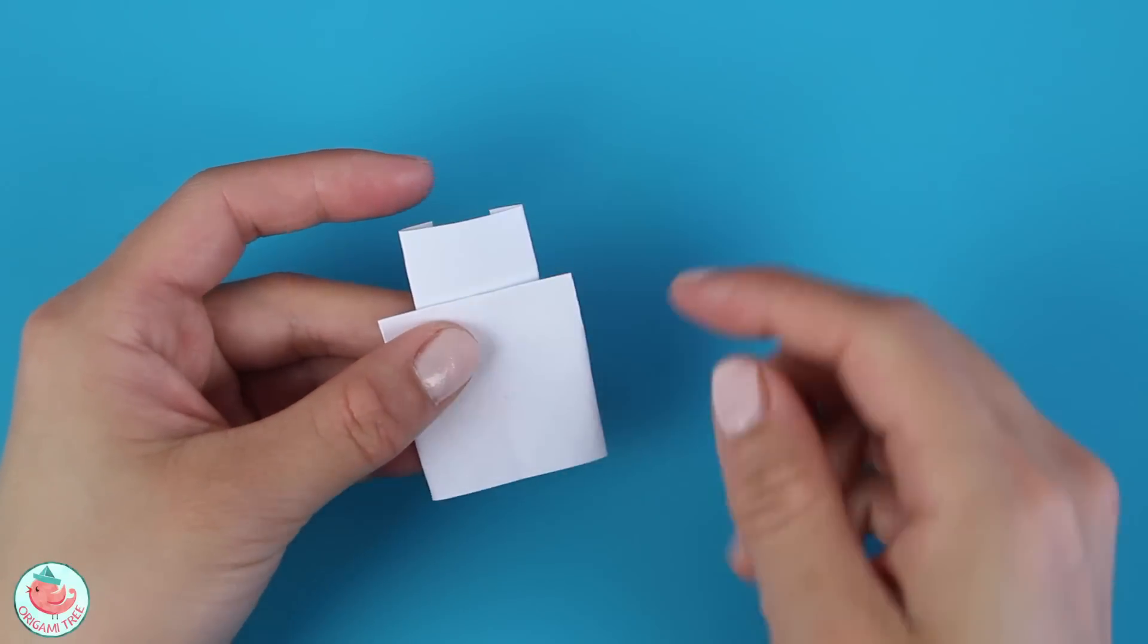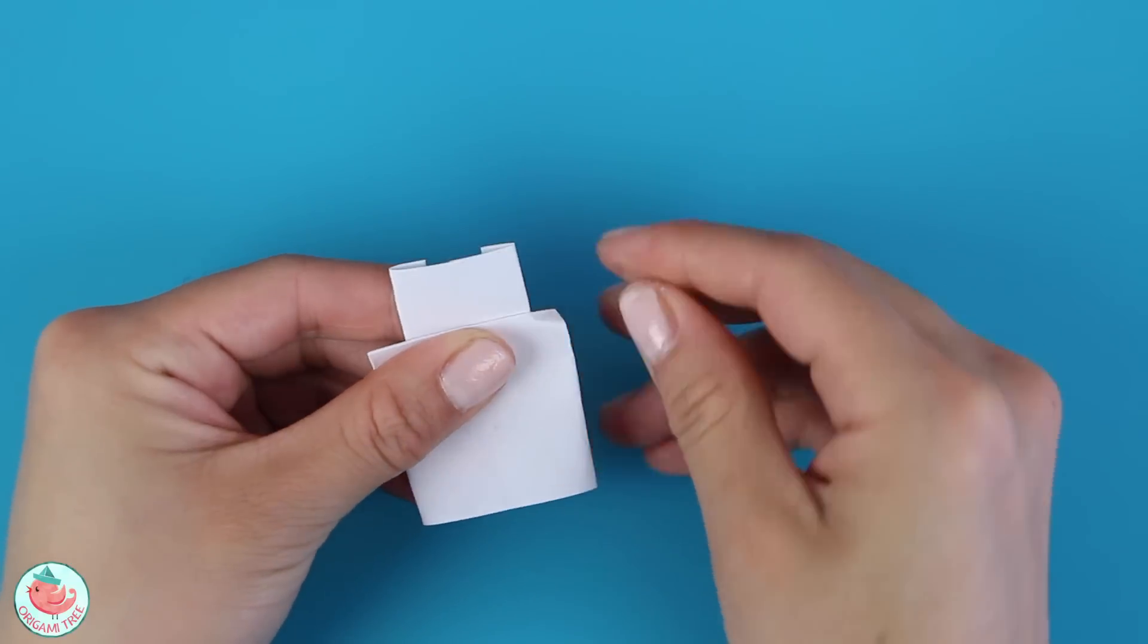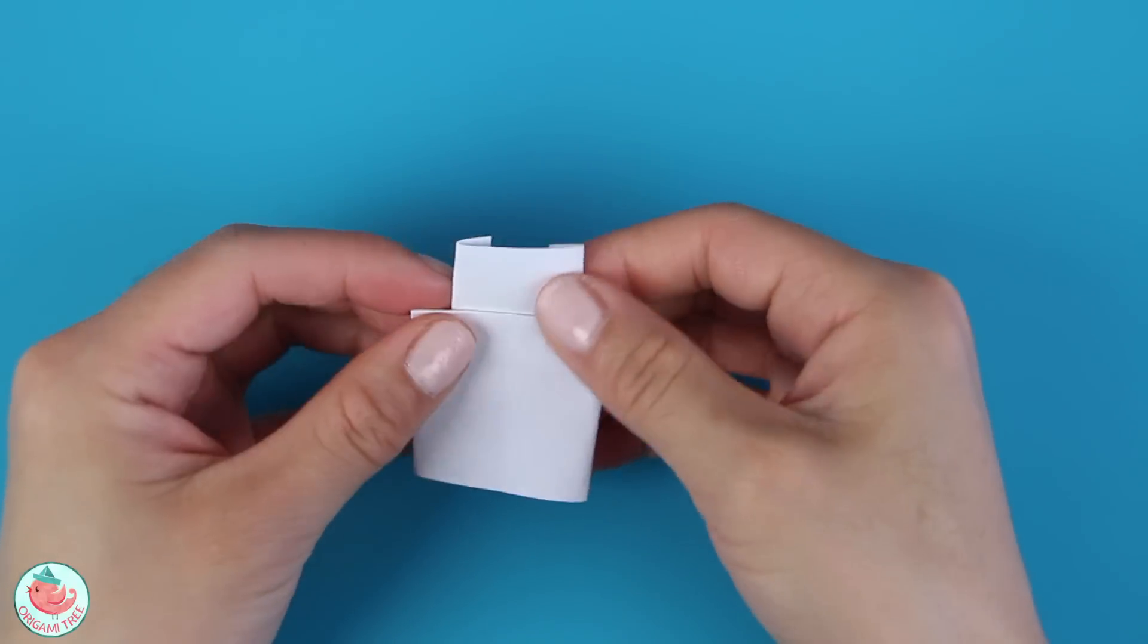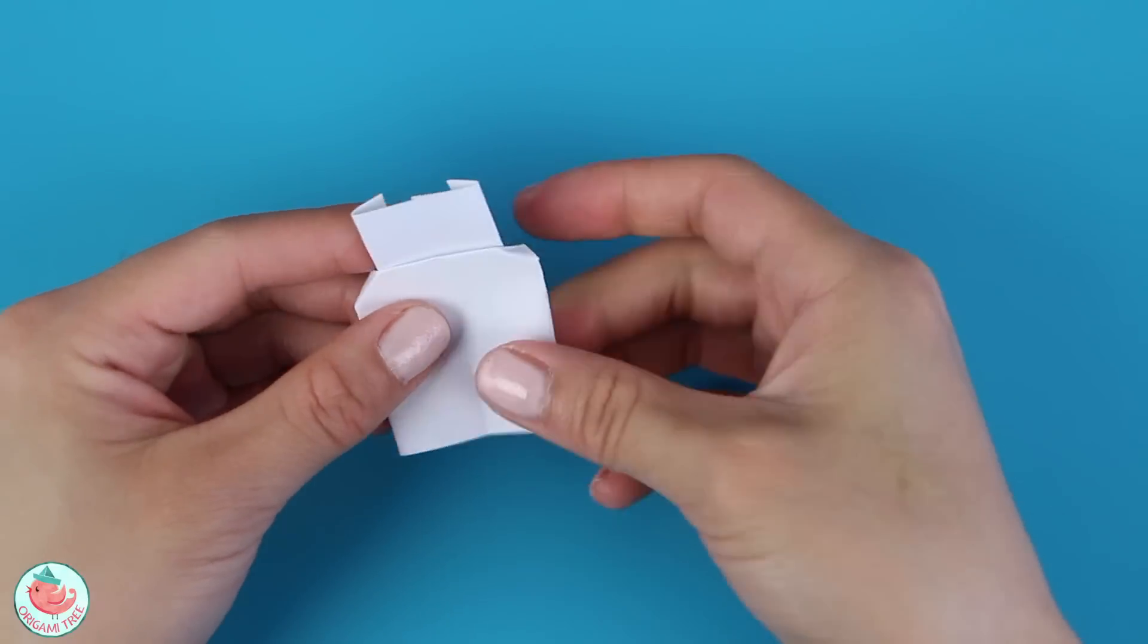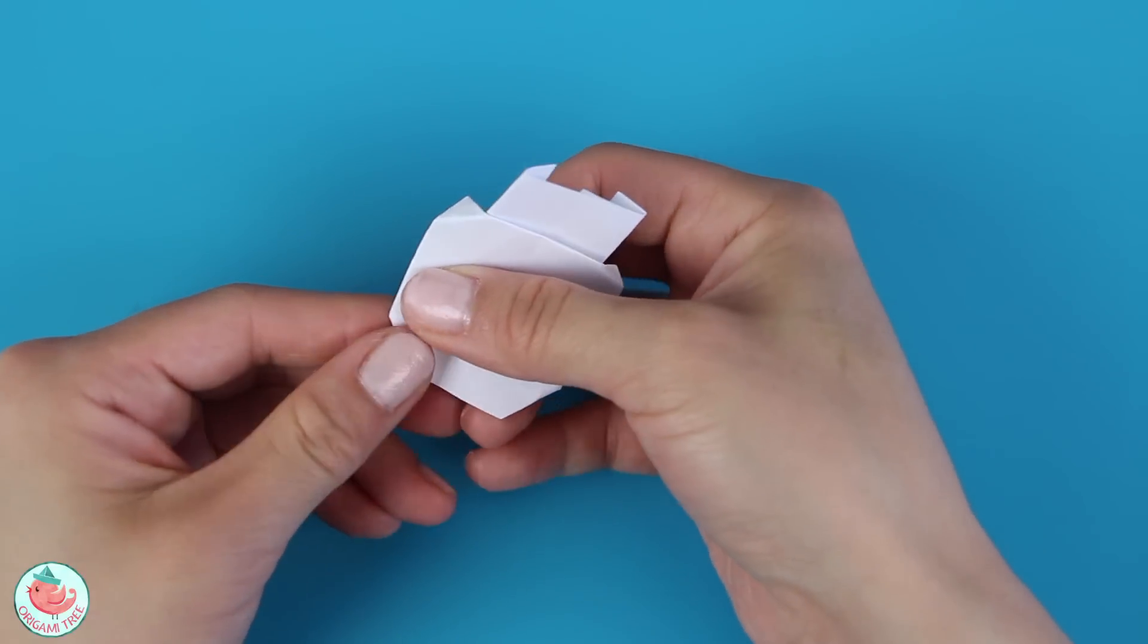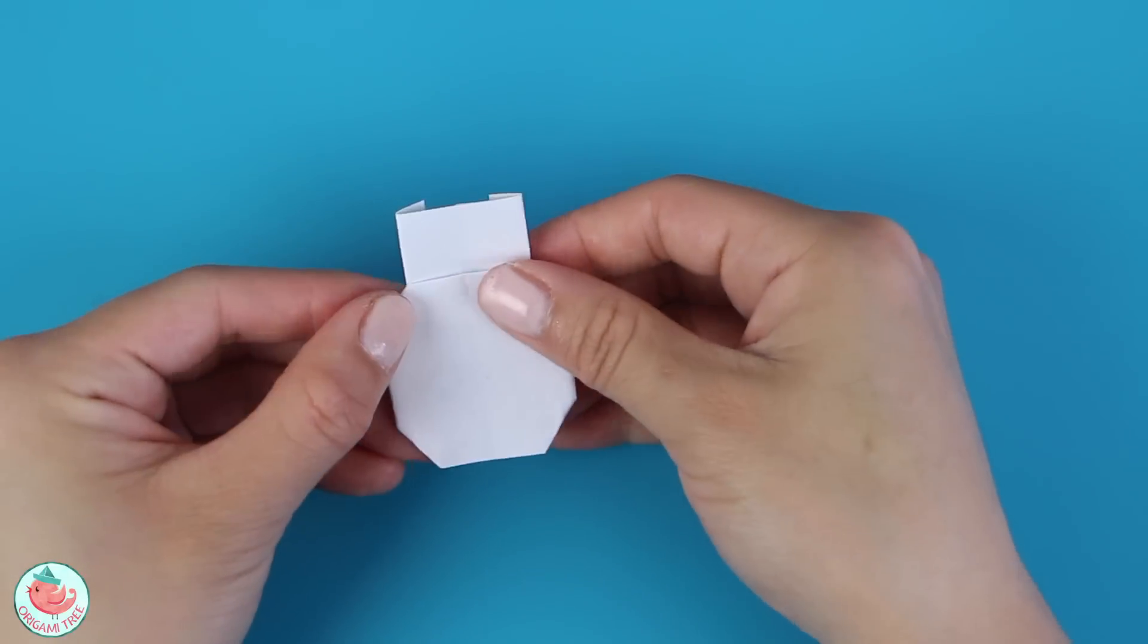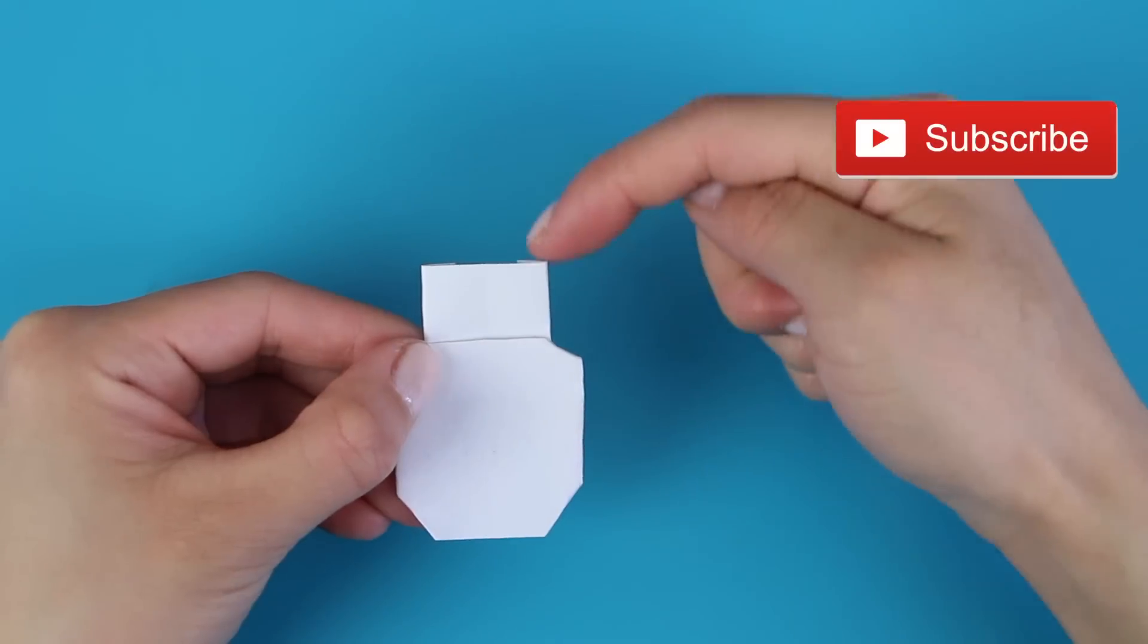And you want to round off the four corners of the BB-8's body. So you're going to fold this back. This one. This one. And this one. And then you're going to round off the two corners for the head.